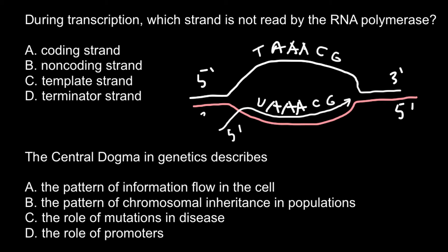For the other strand of the DNA, when we have adenine adenine adenine here on the coding strand, we are going to have thymine thymine thymine on the other strand, because adenine base pairs with thymine, and cytosine with guanine, and guanine with cytosine. That's why we call this strand the template strand of the DNA.